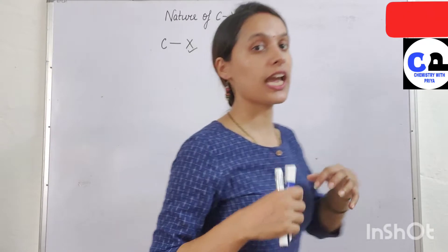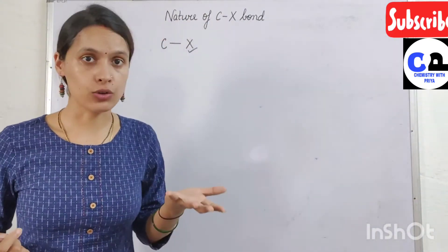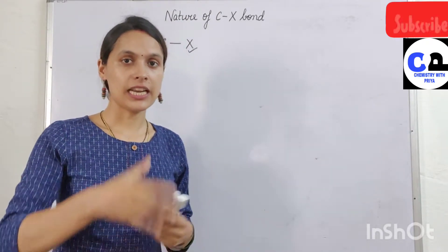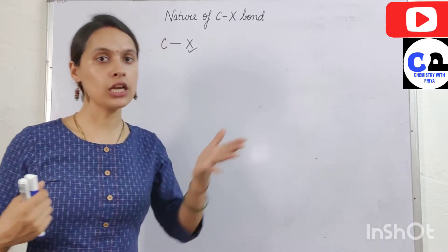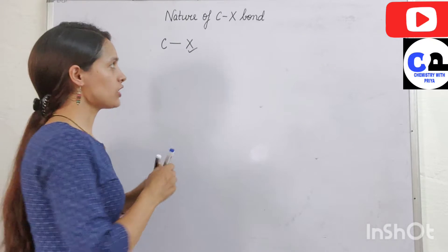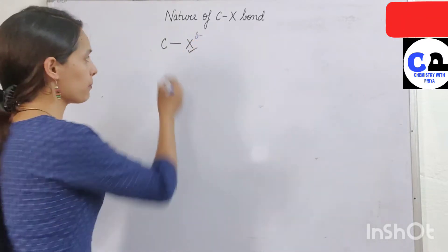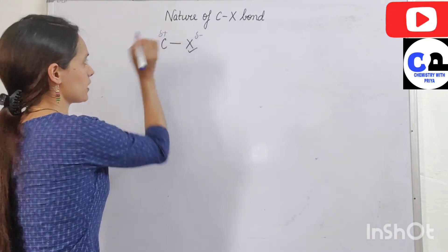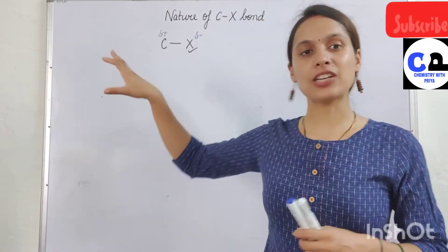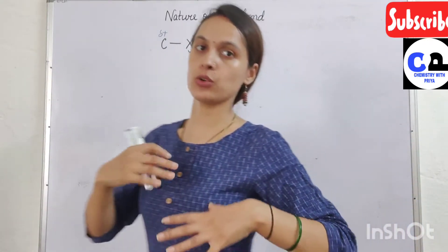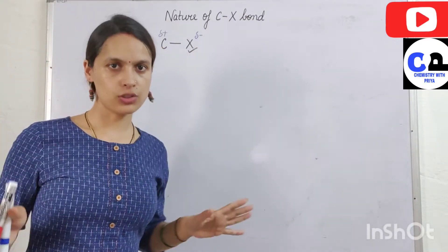The electronegativity of halogens is greater in comparison to carbon. Due to more electronegativity, electrons move towards the halogen. As a result, a partial negative charge is generated over the halogen and a partial positive charge is generated over the carbon. It means it is a polar covalent bond.